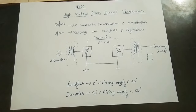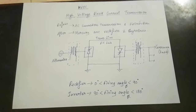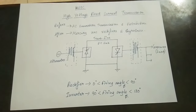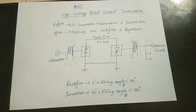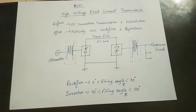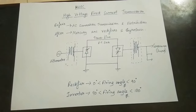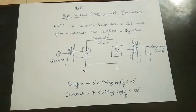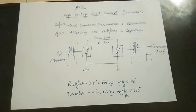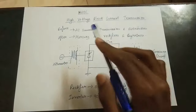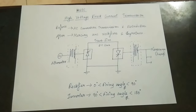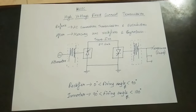EHVAC — Extra High Voltage AC — is also a type of transmission system. HVDC is an alternative to EHVAC. In this video, I will explain the HVDC transmission system.